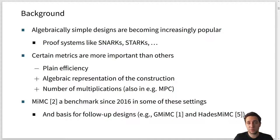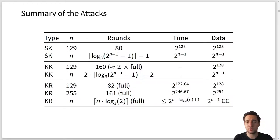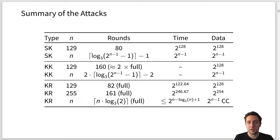Before I present our work, let me give a very short summary of the attacks. First, I will talk about the secret key distinguisher which covers almost the full round number of MiMC. Then I'll talk about the known-key distinguisher which covers almost twice the number of rounds of MiMC. And at the end I will talk about the key recovery attack, which covers full MiMC and actually also a bit more than that.